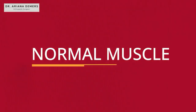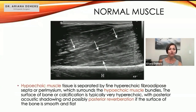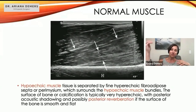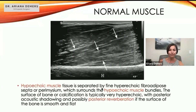This is normal muscle, which is hypoechoic. That tissue is separated by hyperechoic fibroadipose septae and perimysium surrounding those muscle bundles. Below you'll see acoustic shadowing with some posterior reverberation. You can see the striations, just like normal muscle, along with the hypoechoic perimysium or fibroadipose septae. These are just pattern recognition — you'll get used to seeing them.